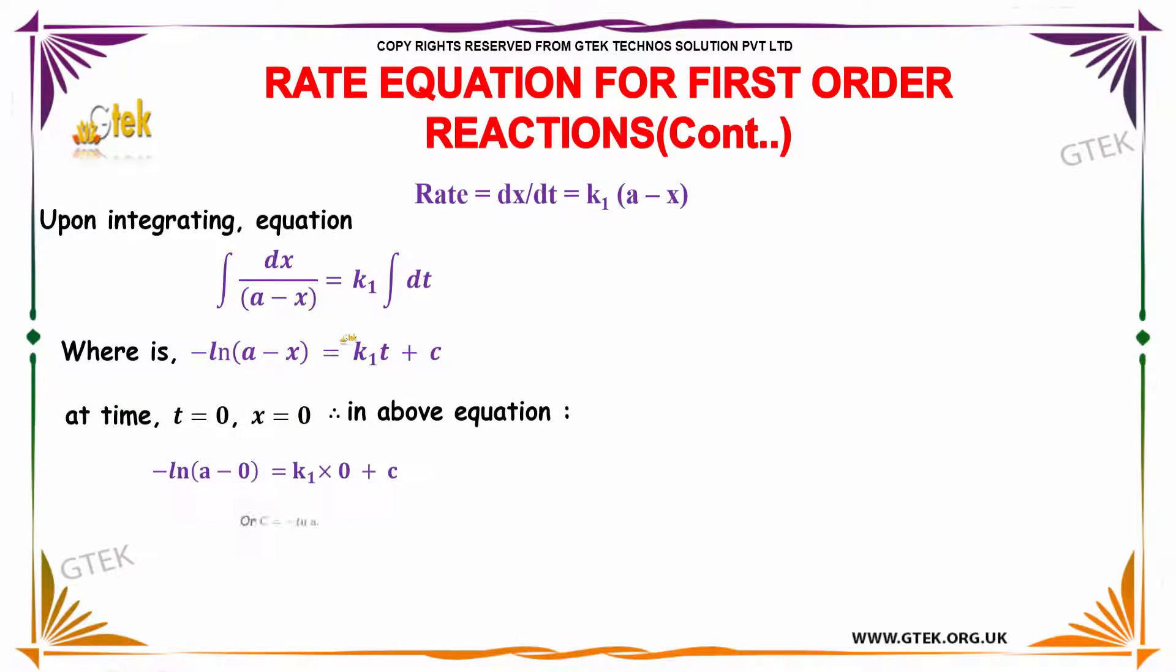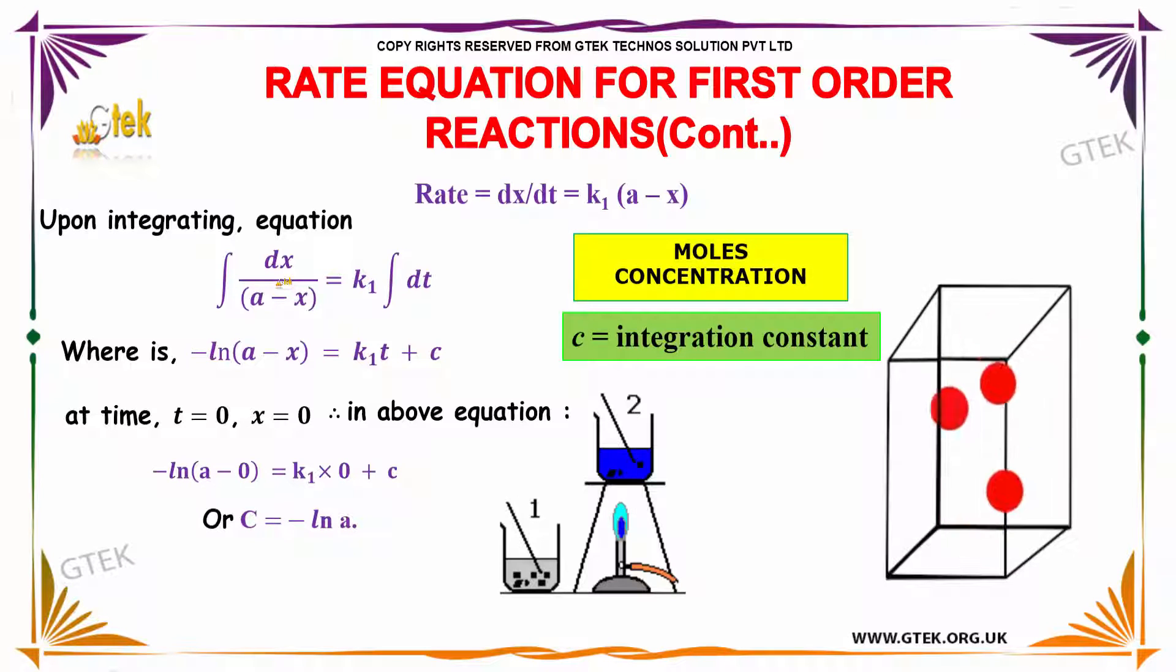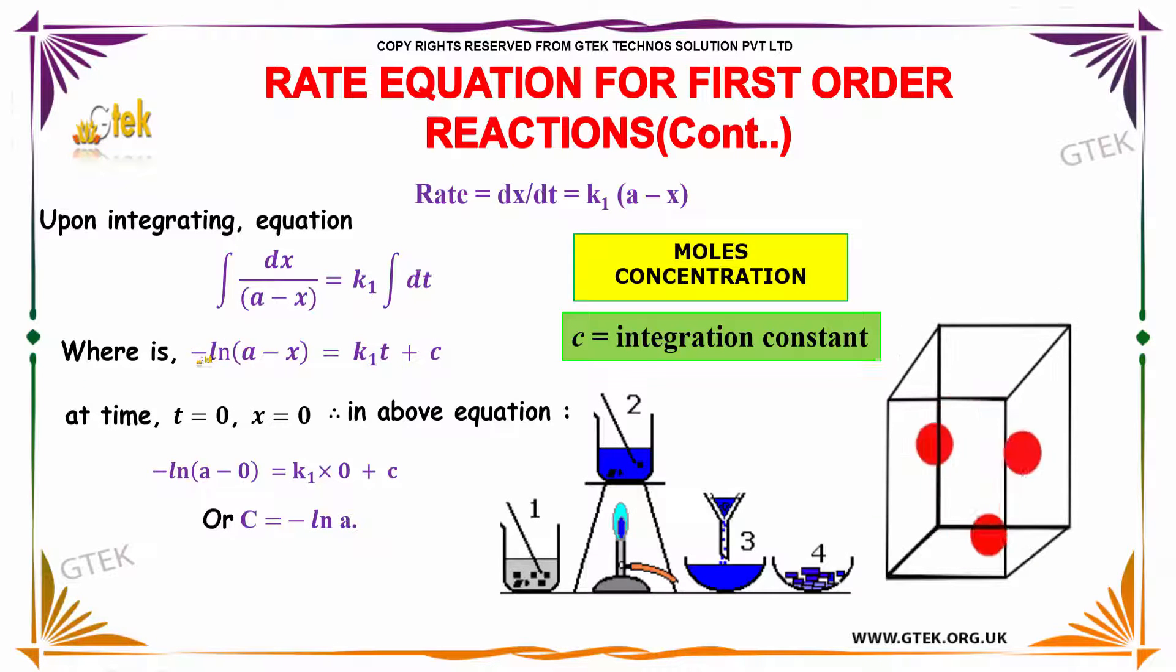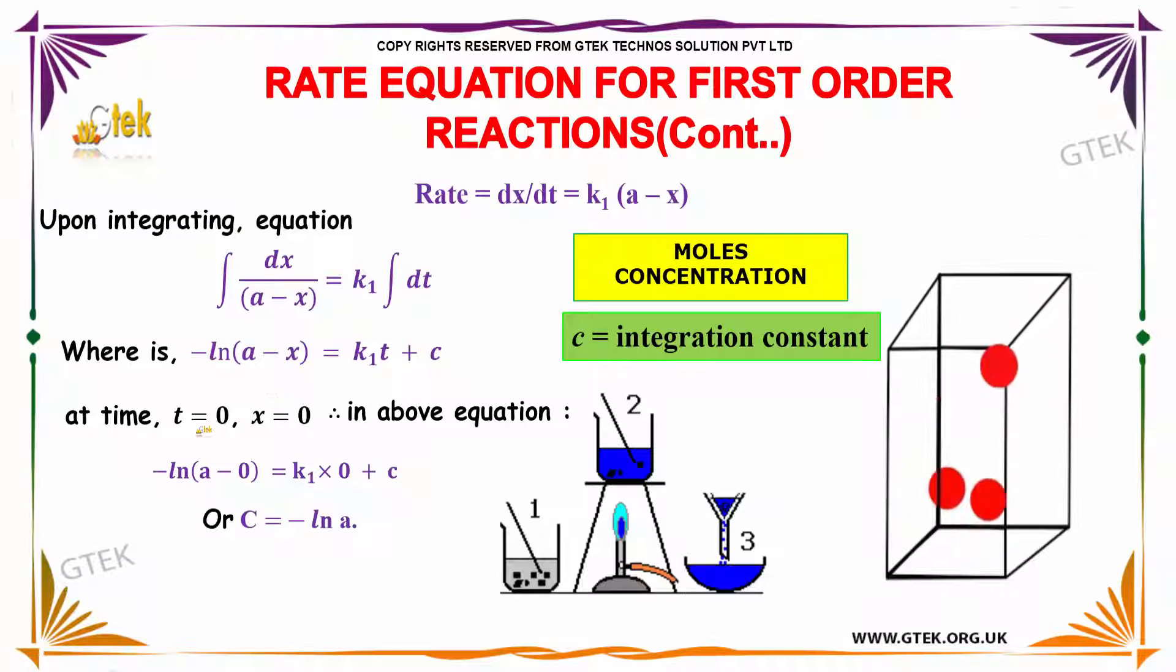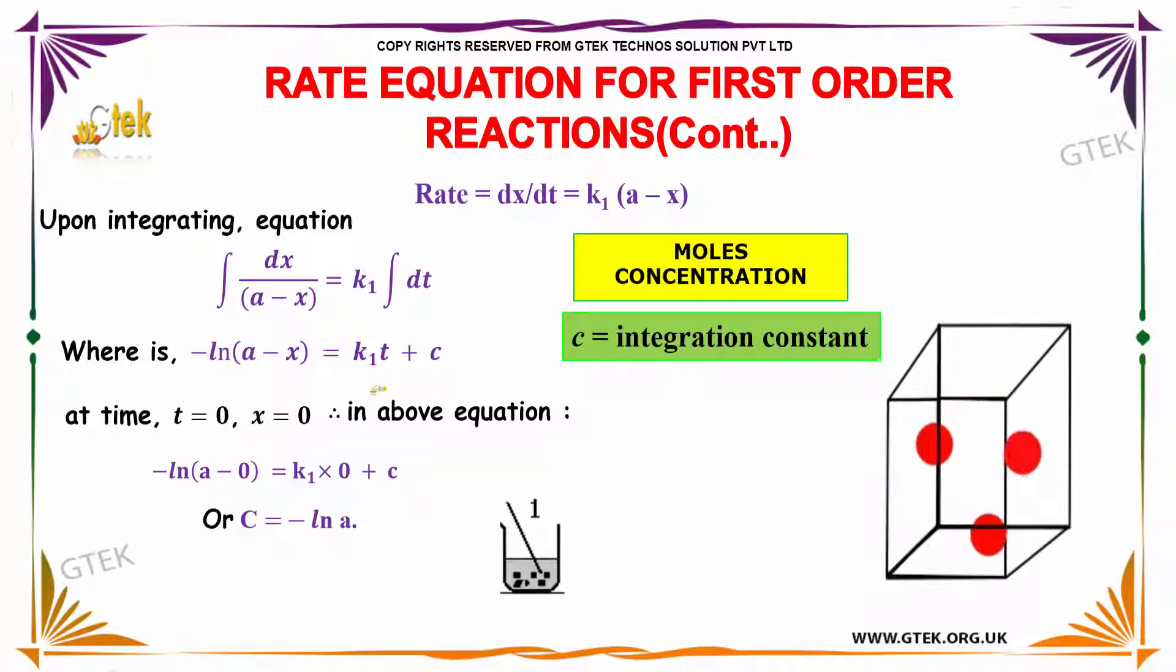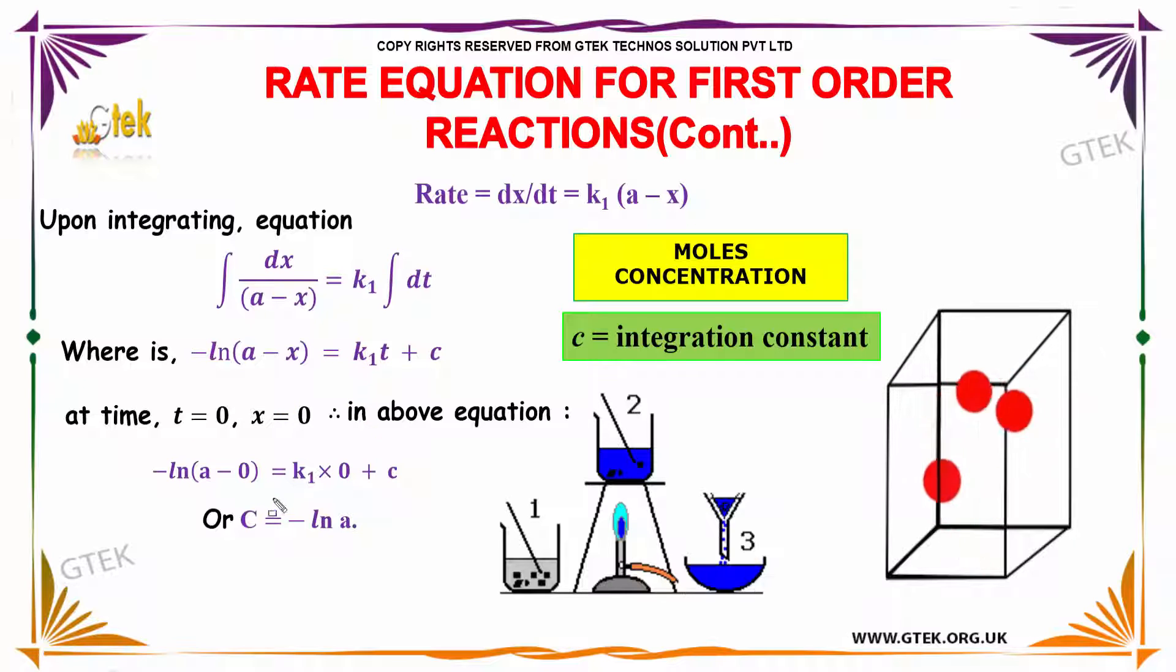Integrating on both sides, you will get dx/(a-x) = K1 dt. You will get -ln(a-x) = K1·t + c. Where t=0 and x=0 in the above equation, you get c = -ln(a).